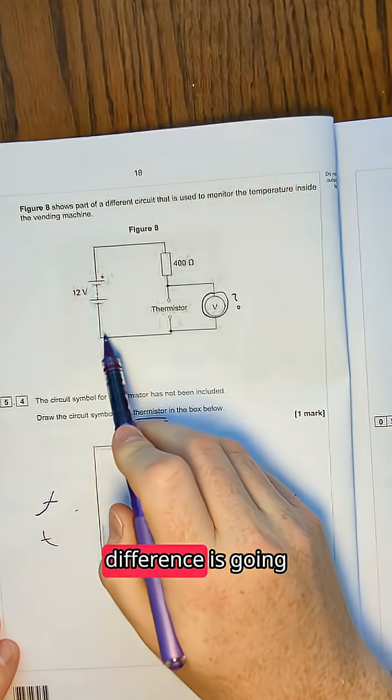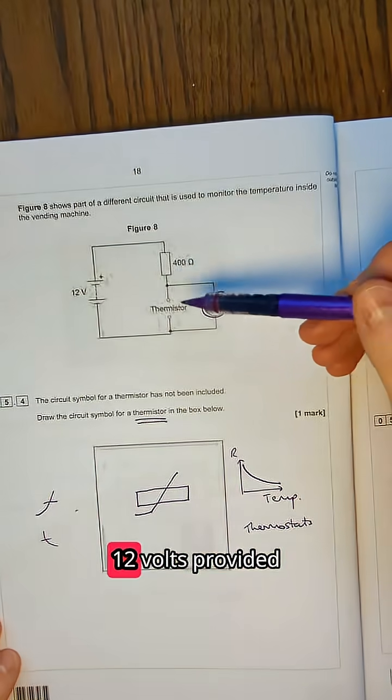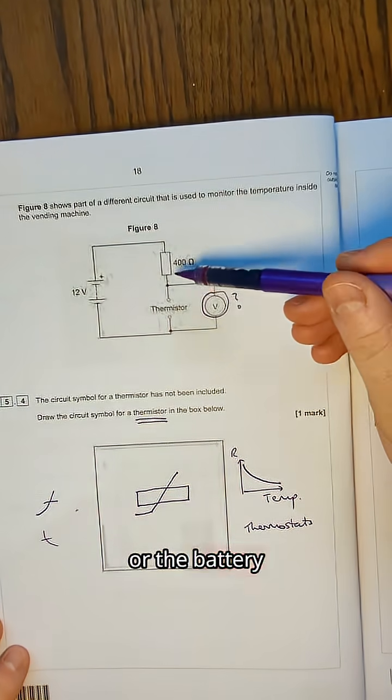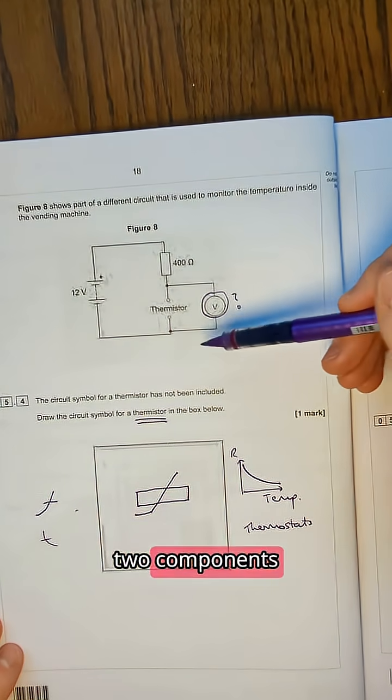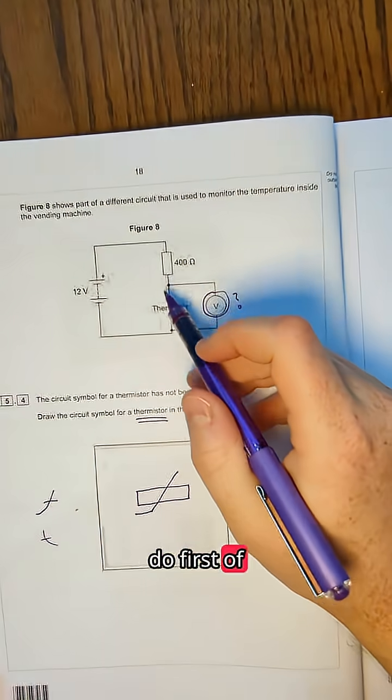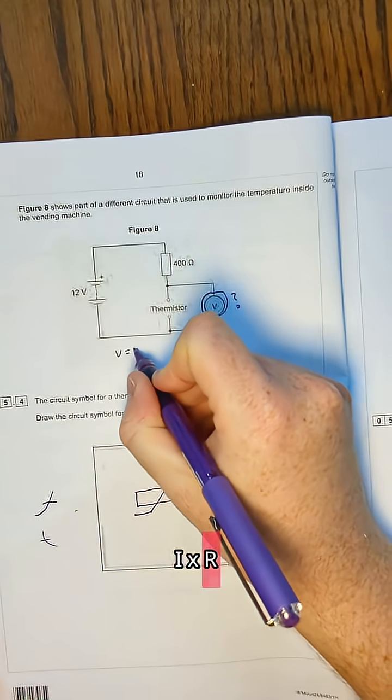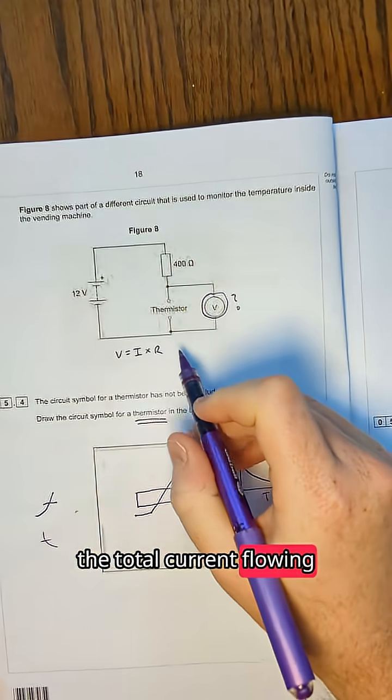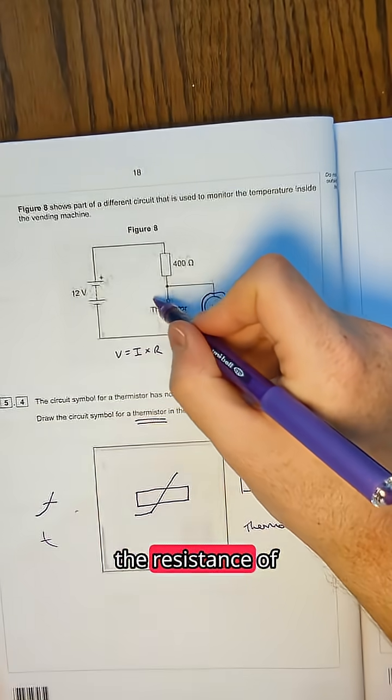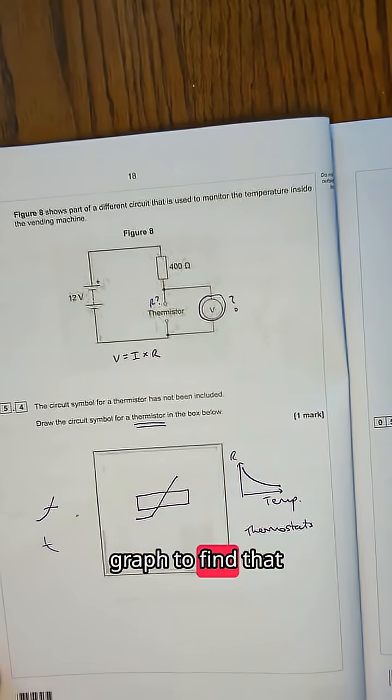Now we should know the potential difference is going to be fixed in a circuit. 12 volts provided by the cell or the battery has to be shared between these two components. So what we're going to need to do first of all is use V equals IR and work out the total current flowing. And we do that by finding the resistance of this thermistor. So let's go back to the graph to find that.